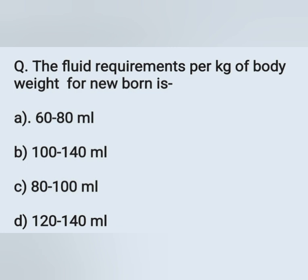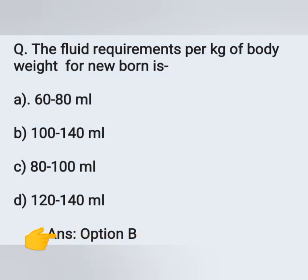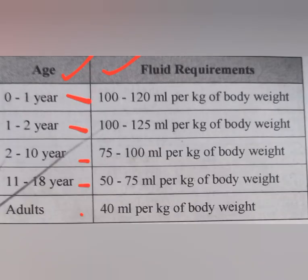The fluid requirement per kg of body weight for a newborn: Option A: 60–80 ml. Option B: 100–140 ml. Option C: 80–100 ml. Option D: 120–140 ml. The fluid requirement per kg for a newborn is 100–140 ml. Option B is the correct answer. For reference: 0–1 year: 100–120 ml/kg; 1–2 years: 100–125 ml; 2–10 years: 75–100 ml; 11–18 years: 50–75 ml; adult: 40 ml/kg.